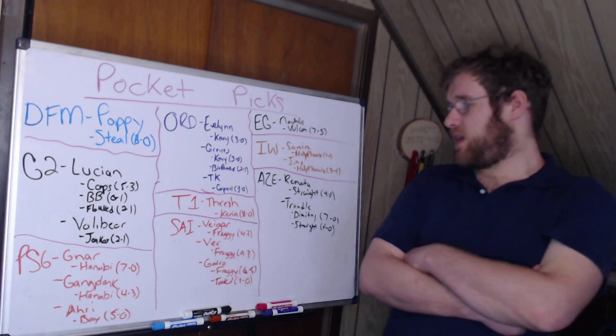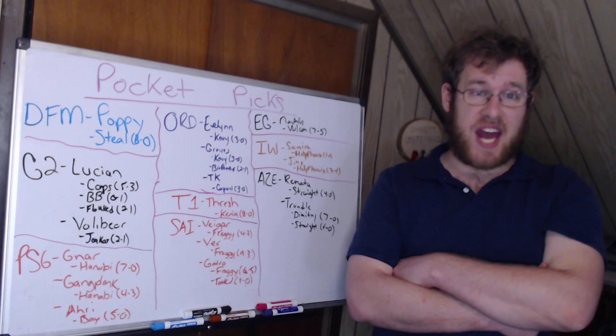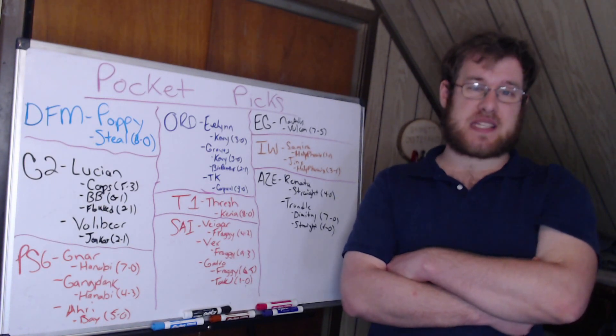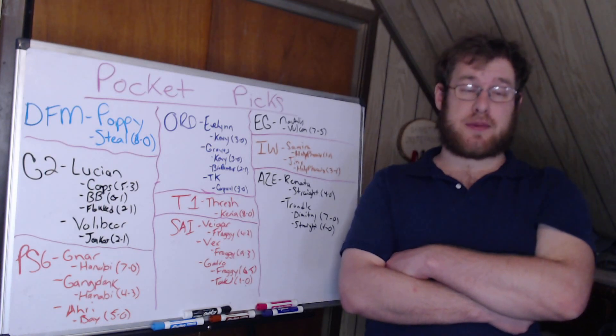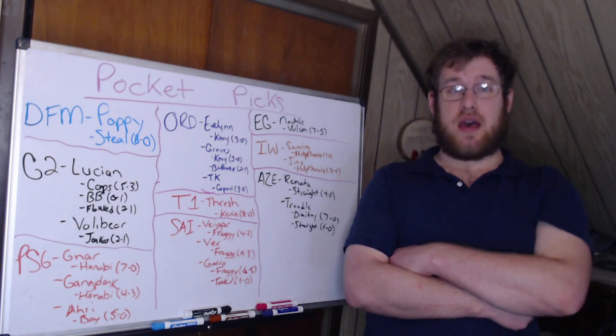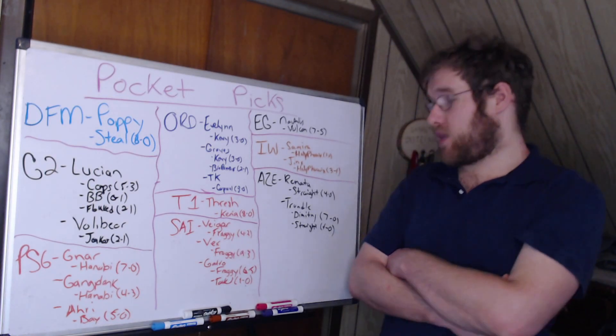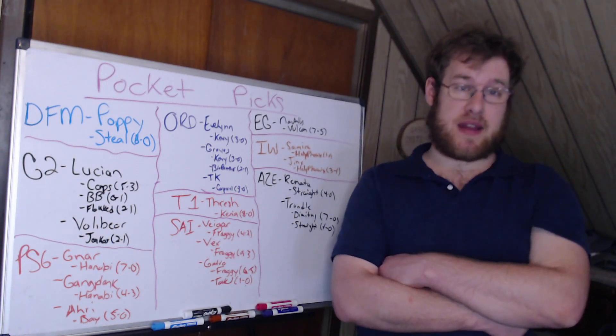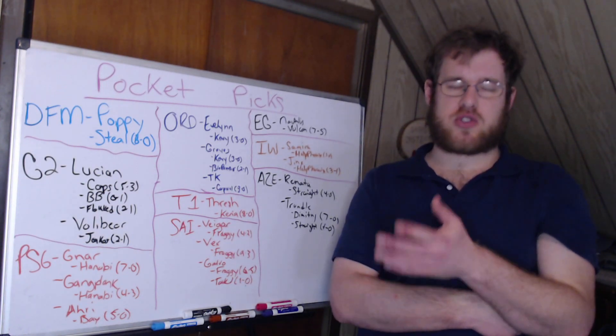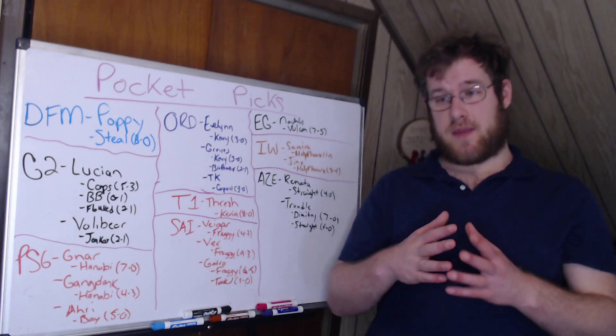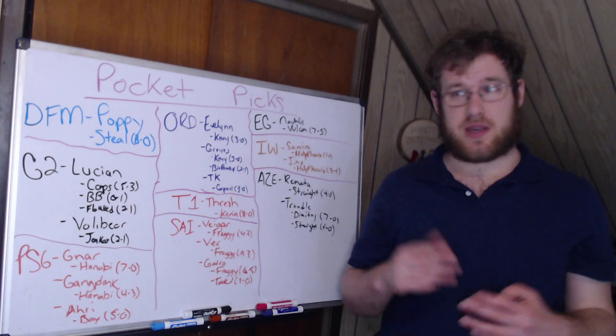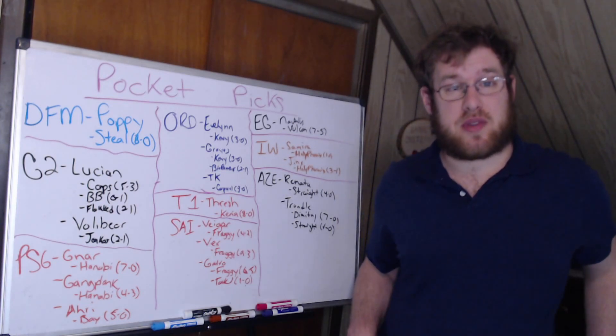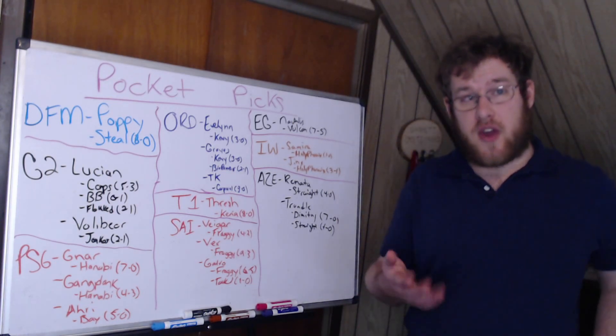Team Aze: Renata. Renata drew a lot of bans against a lot of different players this year, oftentimes being banned in the first rotation. However, when it came to Team Aze, Renata was banned as one of the most banned champions against them all split long. So evidently it was spread across a lot of different champions instead of keying in on a couple. How the heck did Renata end up in the top six?